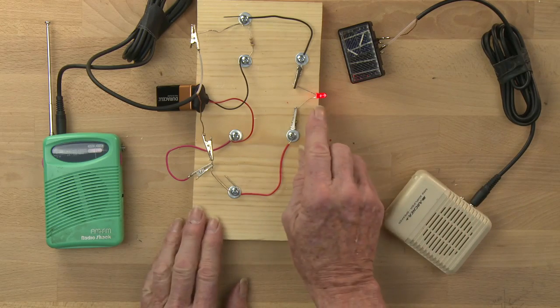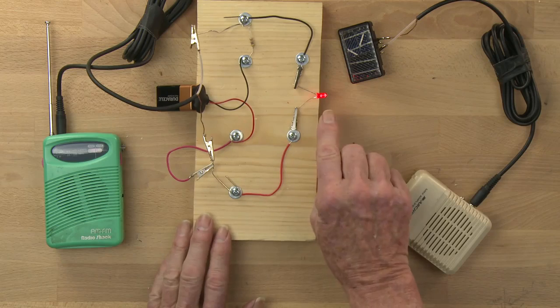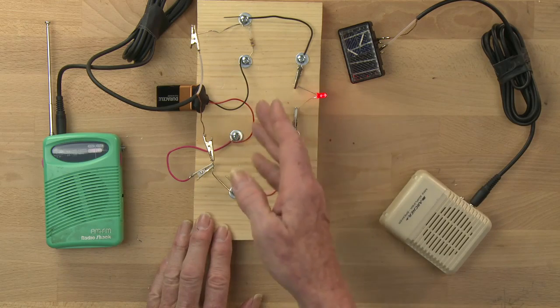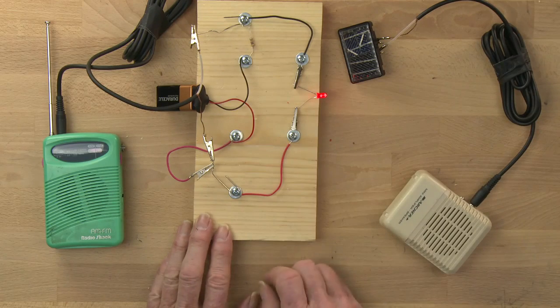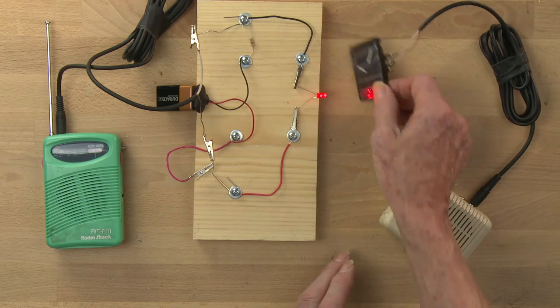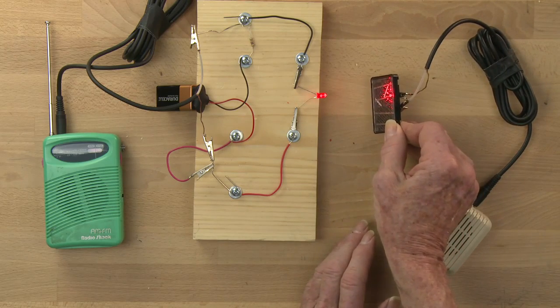So now I have a lit LED, and the audio signal is making it get brighter and dimmer as it adds into our DC signal. Now that brighter and dimmer light shines through space onto this solar cell.